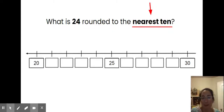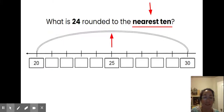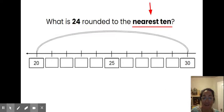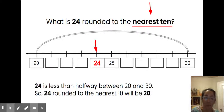You can also think of rounding as going up and down a hill. If we put a ball at the top of the hill not quite at the middle, it's going to roll back down. If we put a ball at the middle of the hill or anywhere higher — in this case 25, 26, 27, 28, or 29 — then our ball is going to roll down to the next number, which would be 30. In this problem, 24 is right before 25, so it's not quite at the middle of the hill and is going to roll back down. 24 is less than halfway between 20 and 30, so 24 rounded to the nearest 10 will be 20.